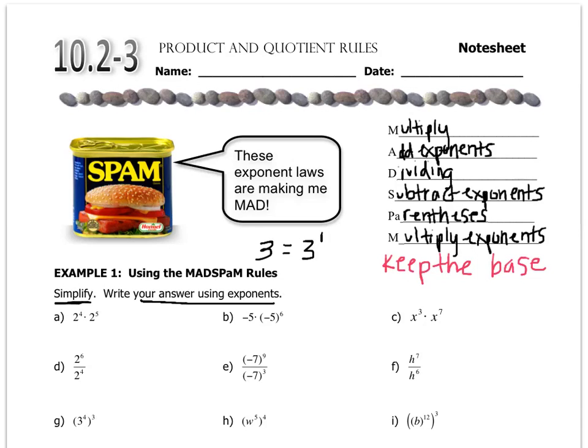So we keep the base, and we are multiplying. So when you're multiplying, you add the exponents and keep the base. So the base is 2, so that stays. And then when I add the exponents, I get 2 to the 9th, and that's all they want me to do.